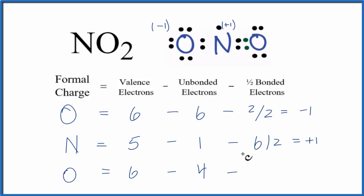And then we subtract the bonded, two, four, over the two. Six minus two minus two, that gives us zero. So the formal charge here is zero.